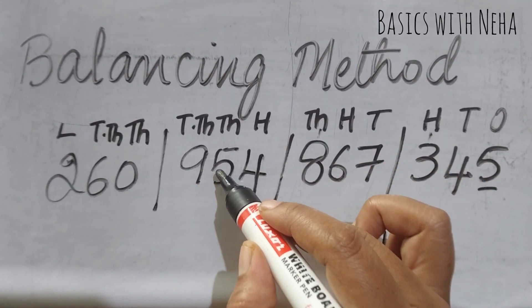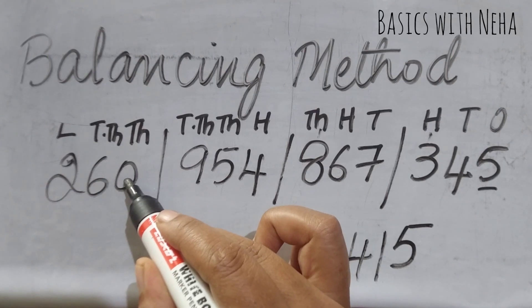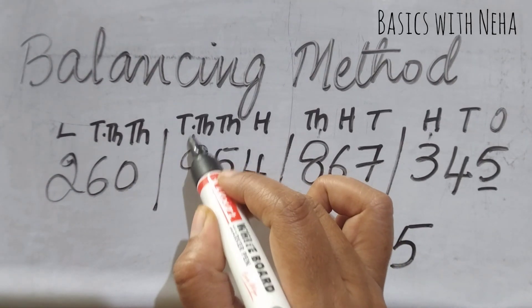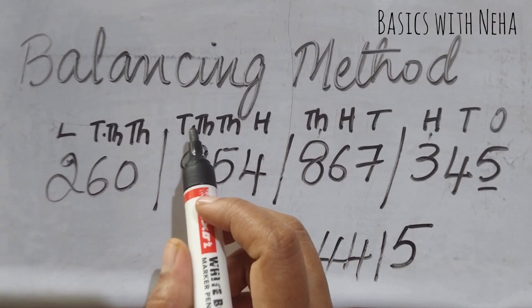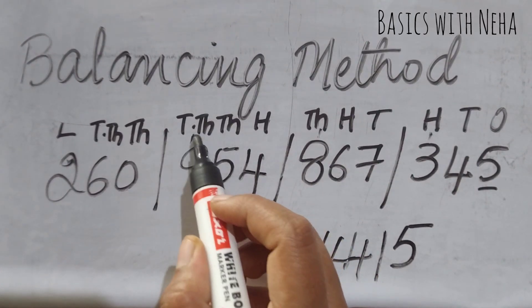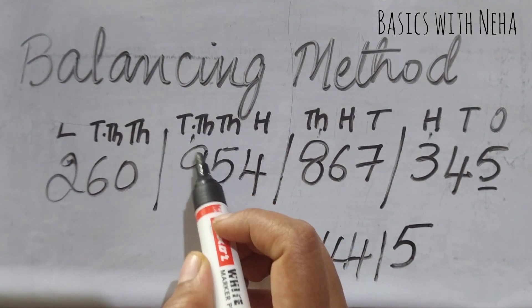So I'm going to take one bar on the ten thousand and write four. Now I have to do the ten thousands place: nine plus one is ten, ten plus six is sixteen.